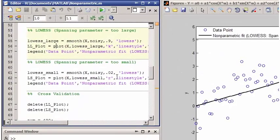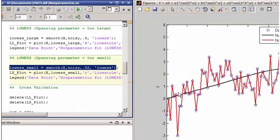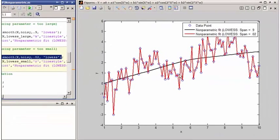Alternatively, if the span is too small, your model will overfit the data. Here, the fitted curve is much too responsive. The predictive model is capturing both the trend and the noise.